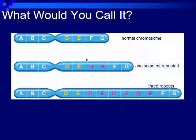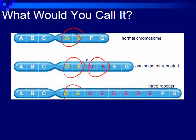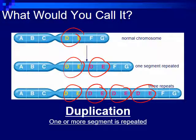We originally had A, B, C, D, E, F, G. However, after the mutation, now we have A, B, C, D, E, D, E, F, G. And then in a further mutation, it keeps going: A, B, C, D, E, D, E, D, E, D, E, F, G. The section D, E continues to pop up repeatedly. This is what we call a duplication, where one or more segments are repeated.